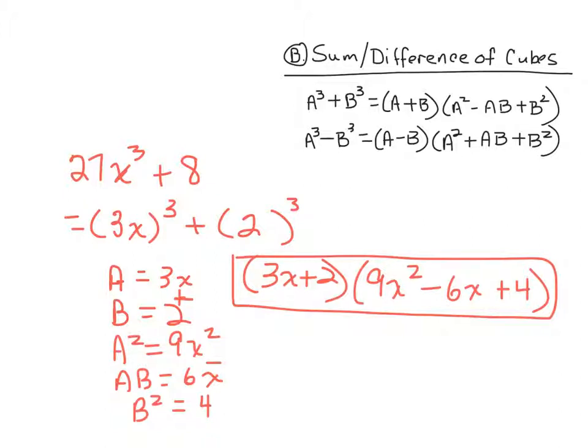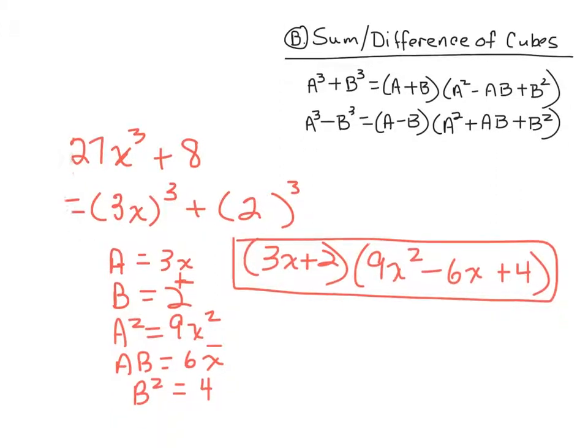3x plus 2 for one factor, 9x squared minus 6x plus 4 for the other factor. Okay, and that's the big picture idea behind the sum of difference of cubes. We're going to do another one just to practice a little more, but really, that's the main portion right there. Well, let's do another one. So move all that off the screen this time. Hang on here a moment, David.